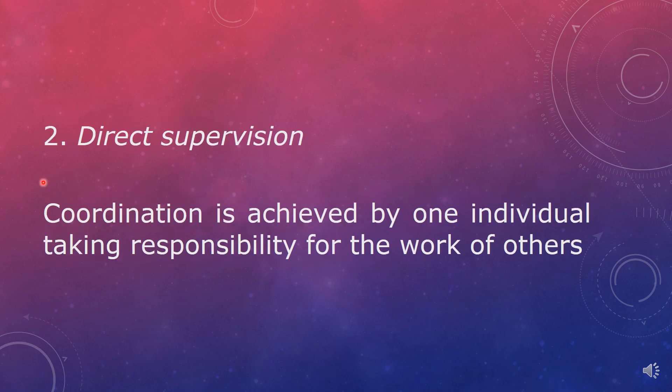The second mechanism is direct supervision. Coordination is achieved by one individual taking responsibility for the work of others. Generally, organizations are not flat — they are vertical, where one manager is responsible for ten people, those ten managers report to a senior manager, senior managers report to a vice president, and vice presidents report to the president or chairman. This structure works well because there must be one person who can oversee what is happening at the grassroots level, increasing efficiency and coordination.